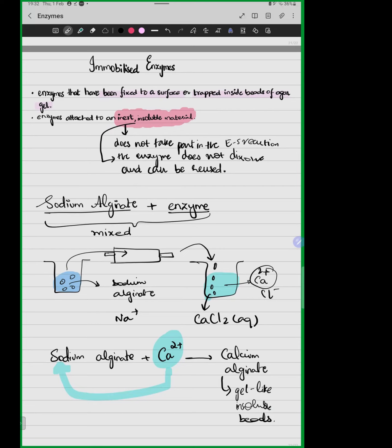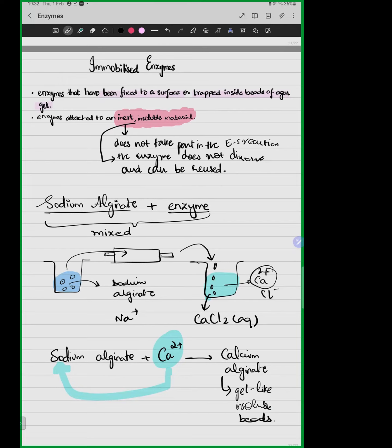So to recap: we had sodium alginate solution, we introduced our enzymes into it, and now through the reaction with calcium chloride, immobilization has occurred. Immobilizing an enzyme means attaching it to an inert or insoluble material — because we do not want our enzyme to dissolve, mix as an impurity, or be lost.